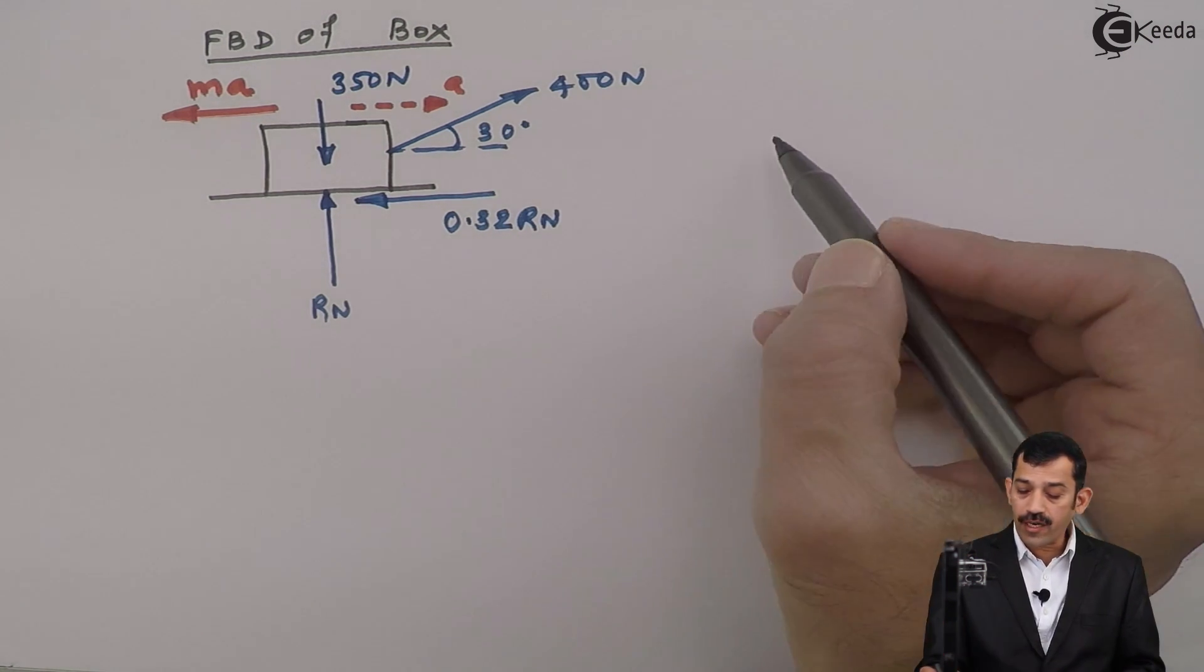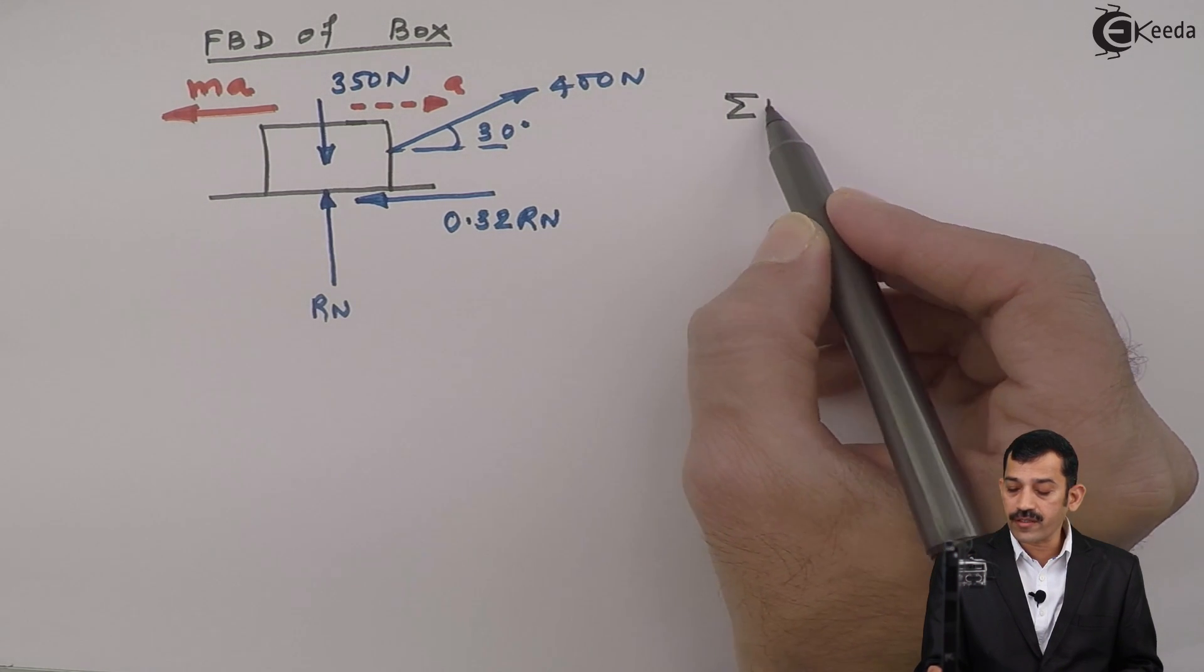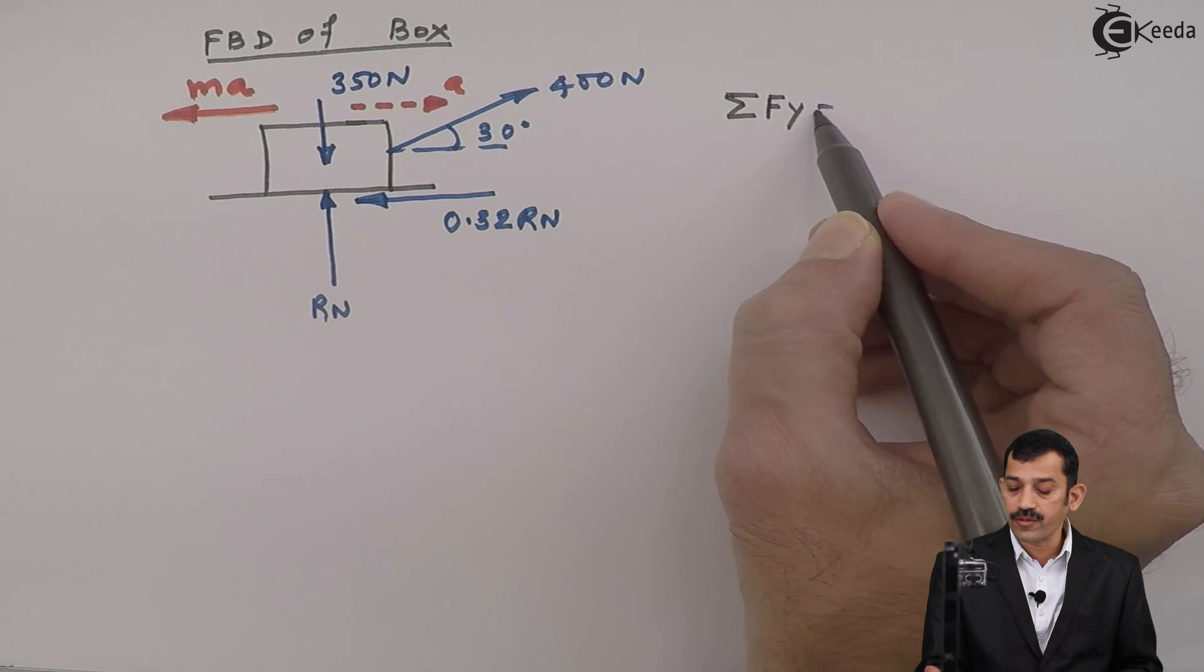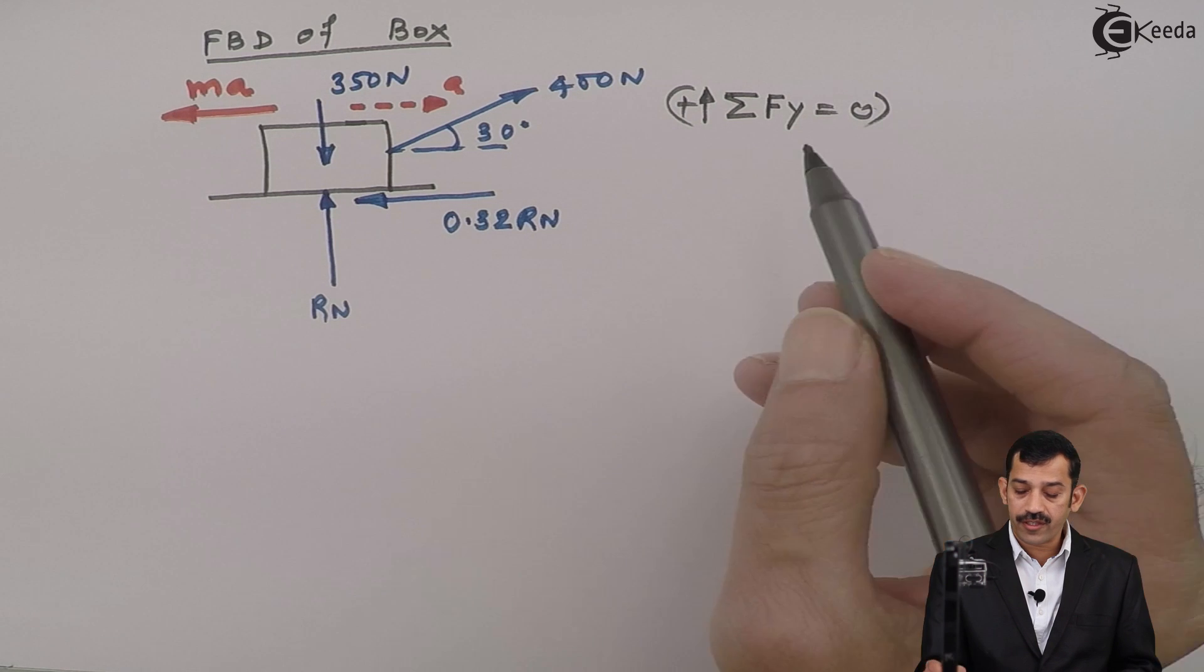Now to find out this acceleration, first we will find out Rn here. To find out Rn, we will apply equation along y axis, summation of Fy equal to 0, assuming upward force is positive.